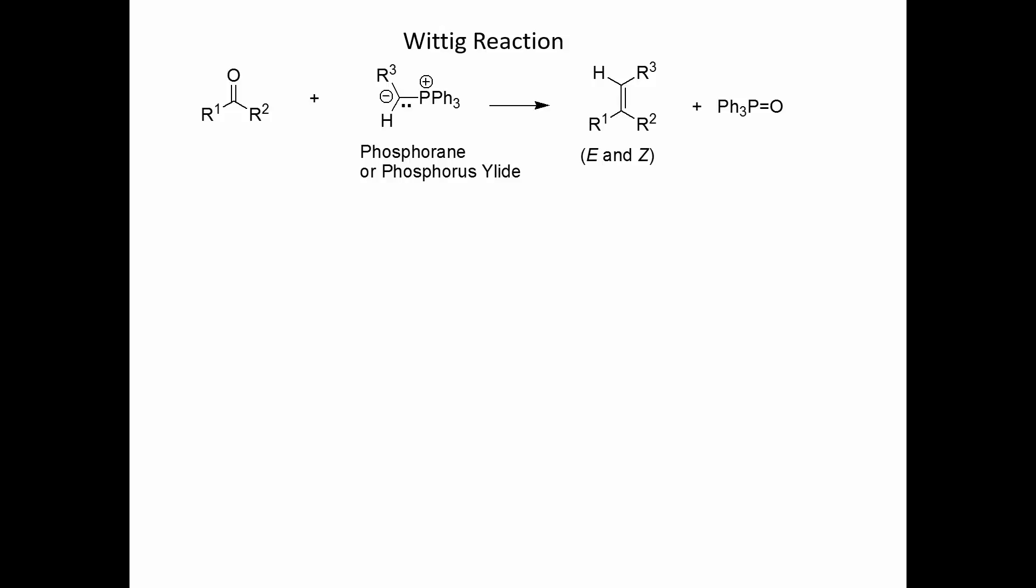So the reaction that you see at the top here is called the Wittig reaction. This is where we take a ketone or aldehyde and a phosphorane or phosphorus ylide. And ylide just means it has a positive and a negative charge present, and they're usually beside each other. In one step, the combination of these two reagents here produces an alkene. It will produce a mixture of E and Z, and it produces as a byproduct triphenylphosphine oxide.